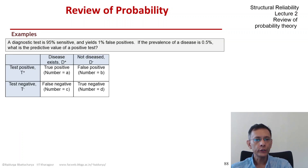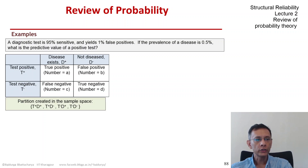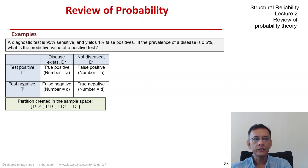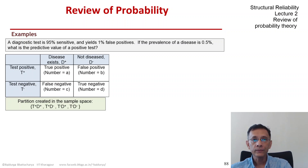We split the sample space into a partition of four sets: T-plus D-plus, T-plus D-minus, T-minus D-plus, and T-minus D-minus. T-plus means the test is positive, T-minus means the test is negative — we could use T and T-bar, but we use plus and minus notation here. Likewise, disease exists is D-plus and disease does not exist is D-minus.